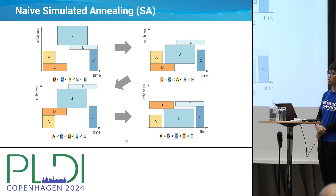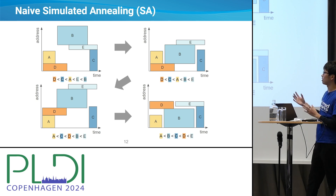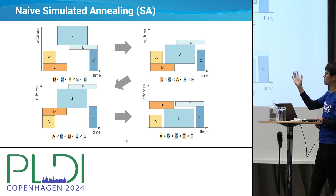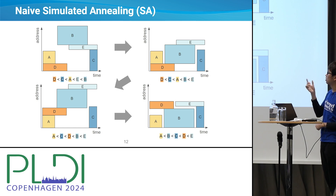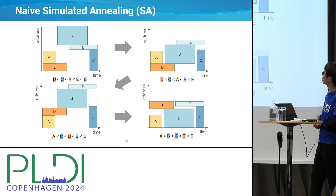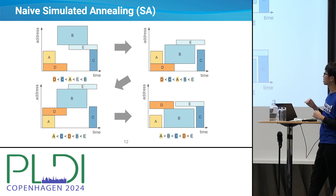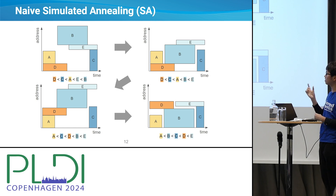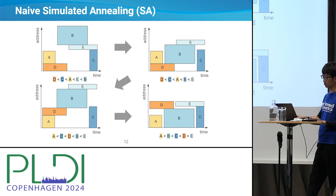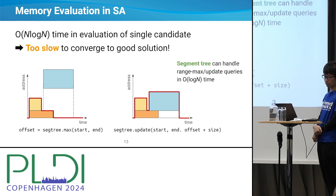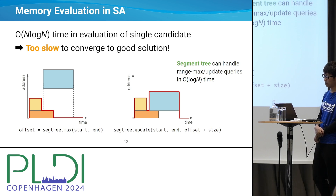One idea to solve this problem is naive simulated annealing. We first initialize a topological ordering such as D, C, A, E, B, and in each iteration we slightly change the topological ordering. With the new topological ordering, we evaluate the memory assignment. If the address range size is minimized, we update the current topological ordering. If it's not minimized, we still probabilistically update the topological ordering to avoid converging to local minima. However, such naive simulated annealing is slow because it takes O(n log n) time for the memory evaluation of a single candidate.